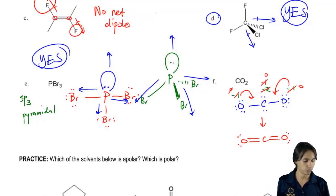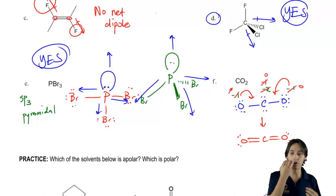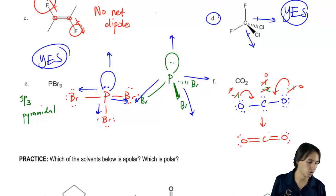So now we have to look at dipoles. Well, are there any dipoles? Yes, the O's are pulling away from the carbon. All right, and then we also have the lone pairs pulling in these directions.